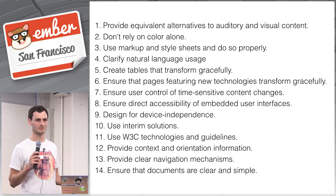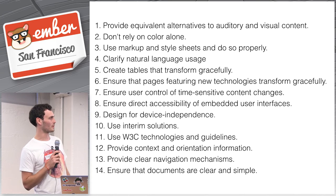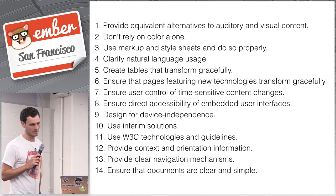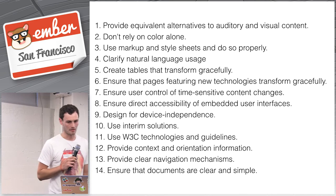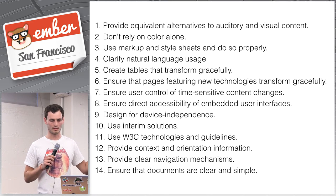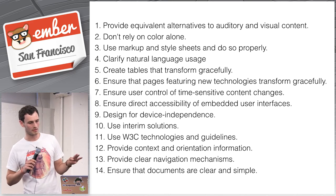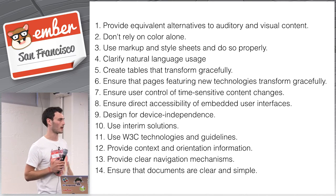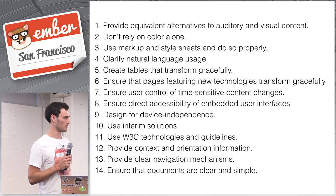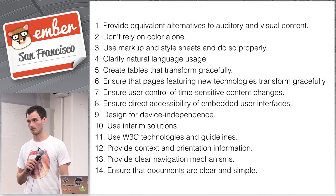I'll quickly go through the 14 guidelines. First: provide equivalent alternatives to auditory and visual content — things like alt attributes, the longdesc attribute, captions, and an auditory track. Second: don't rely on color alone — if color is the thing presenting your content, that's a big no-no, especially for colorblind or visually impaired users.